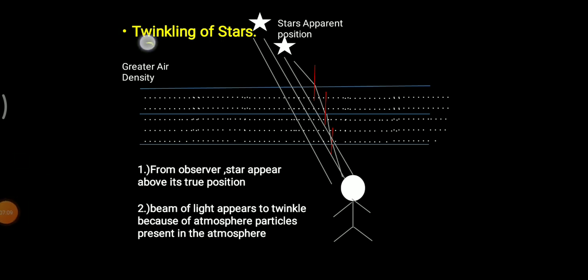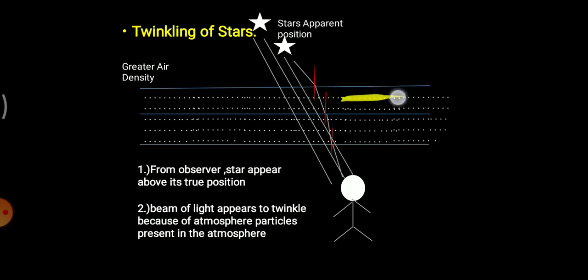Now, twinkling of stars: stars do not twinkle; the individual observing the star has a perception that it is twinkling. A ray of light is emitted by a celestial object like a star, and as it travels through different layers of the atmosphere, it undergoes refraction. If the original position of the star is here, when the ray of light passes through the first layer, a normal is created and refraction occurs.